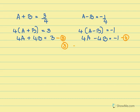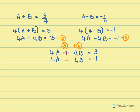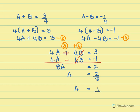Now I will add equations 3 and 4. So I have 4a plus 4b equals 3, and 4a minus 4b equals minus 1. The b terms are opposite in sign, so they cancel out when I add. So 4a plus 4a gives 8a, and 3 minus 1 gives 2. So a equals 2 by 8, which simplifies to a equals 1 by 4.